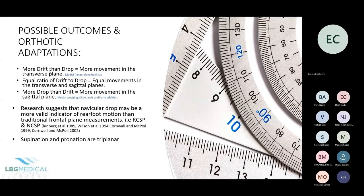If there is more drift than drop, there is more movement in the transverse plane, so you might consider a medial flange or deeper heel cup to control that movement. If there is more drop than drift, movement is more in the sagittal plane, so you might consider more medial wedging or a Kirby skive, or prescribe the orthotic arch with no addition so the arch completely conforms to the patient's arch.